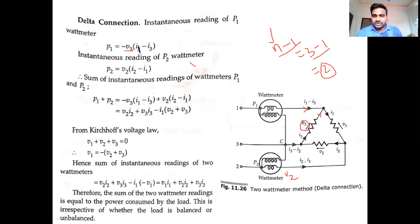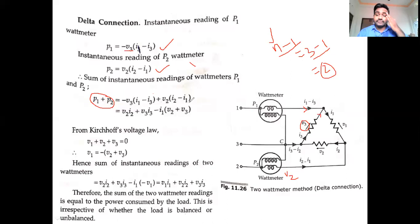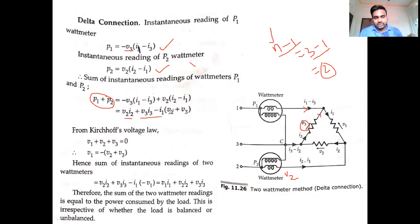Power is measured with 2 wattmeters: P1 and P2. What is the value of P1 + P2? P1 + P2 = -V3·(I1 - I3) + V2·(I2 - I1) = V2·I2 + V3·I3 - I1·(V2 + V3).